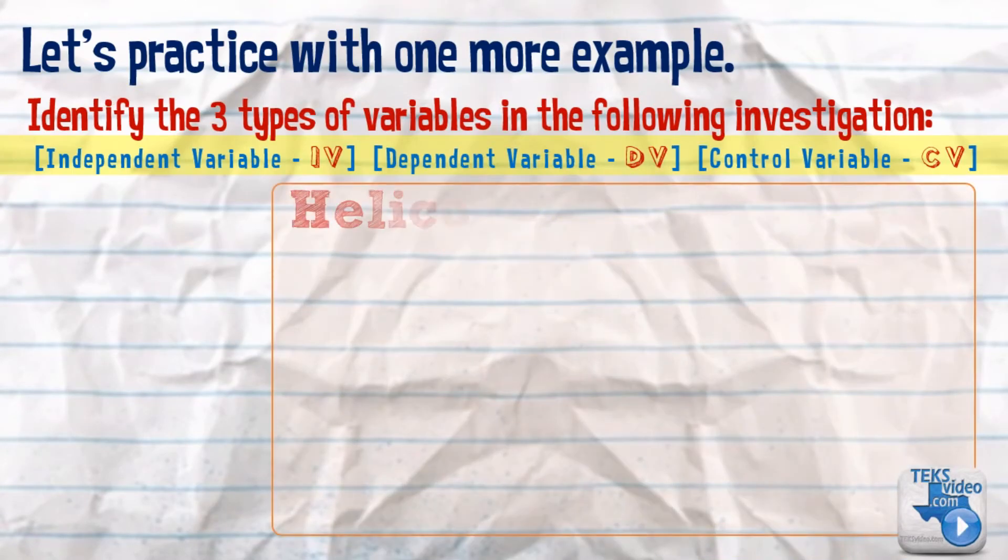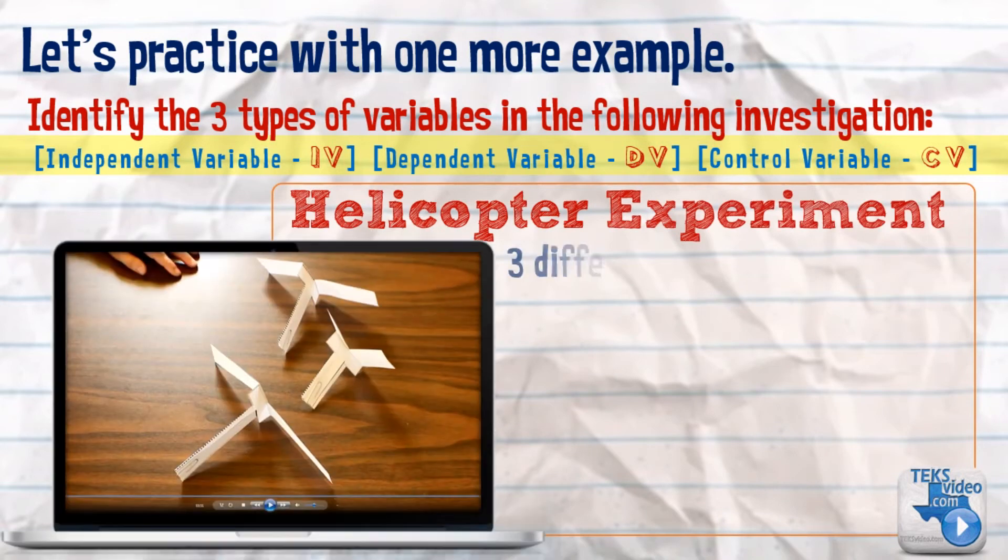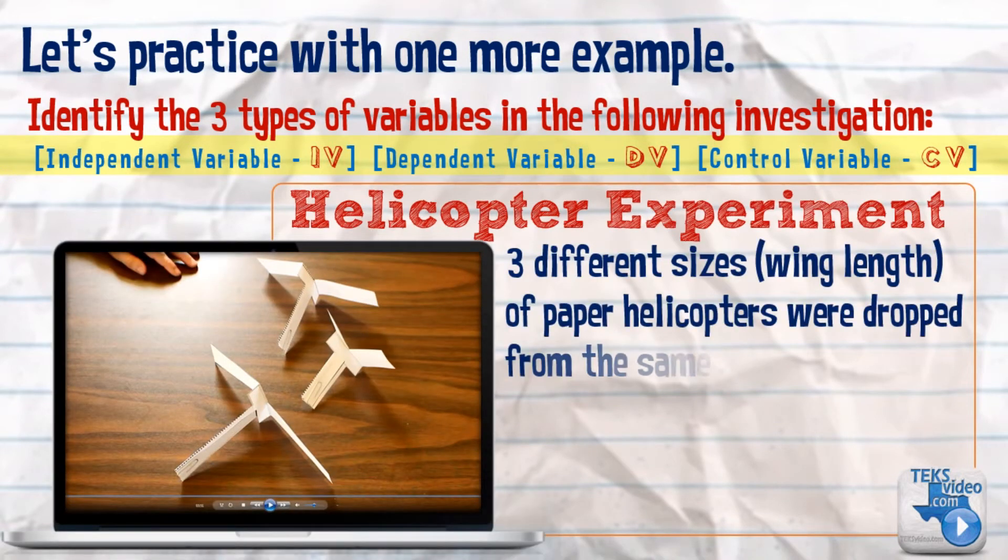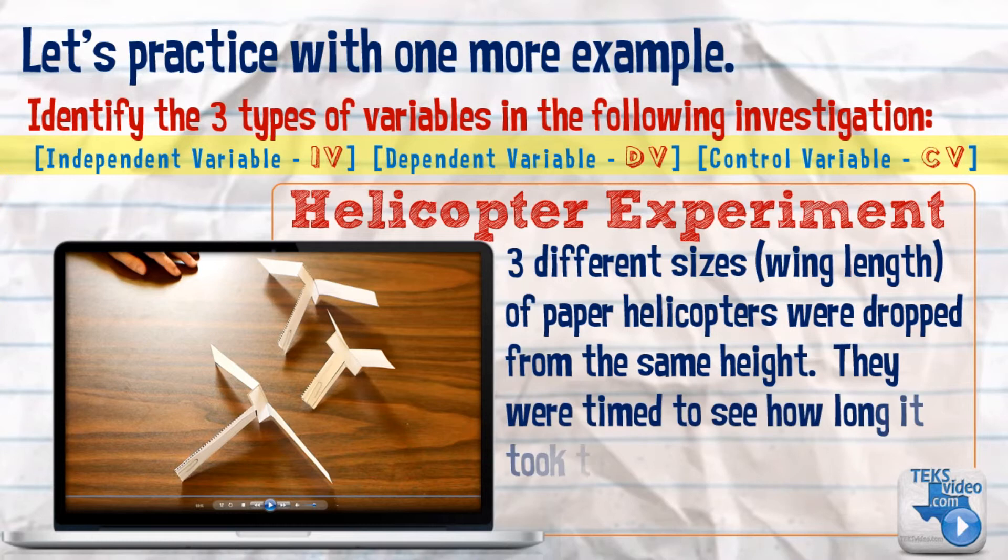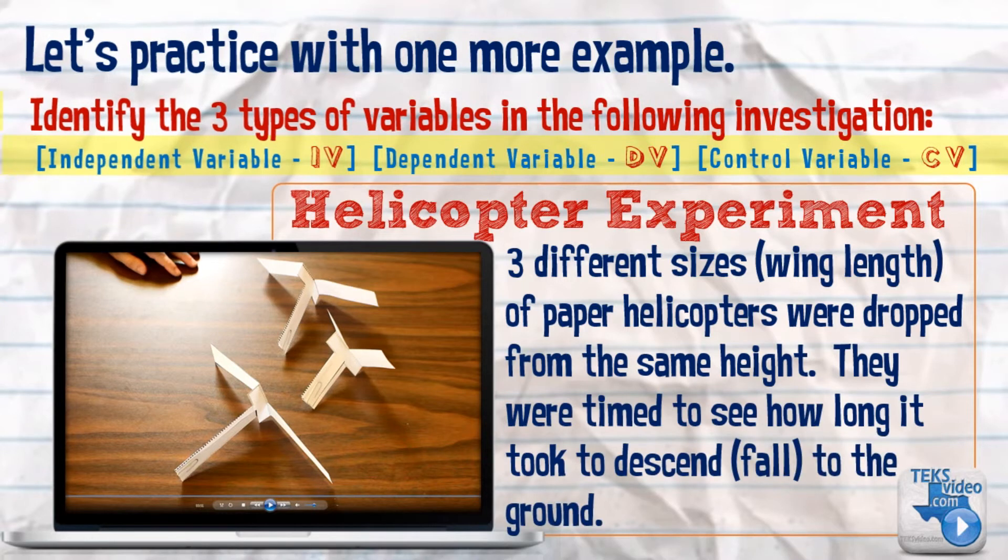Let's practice with one more example, our helicopter experiment. Three different sizes, or wing lengths, of paper helicopters were dropped from the same height. They were timed to see how long it took to descend, or fall, to the ground.